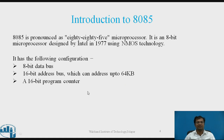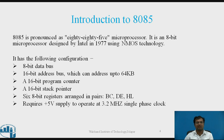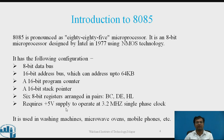It has a 16-bit program counter (PC) register and a 16-bit stack pointer (SP). It has general purpose registers B, C, D, E, H, and L. It requires a +5 volt power supply and operates at 3 MHz clock frequency. It is used in washing machines, mobile phones, etc.